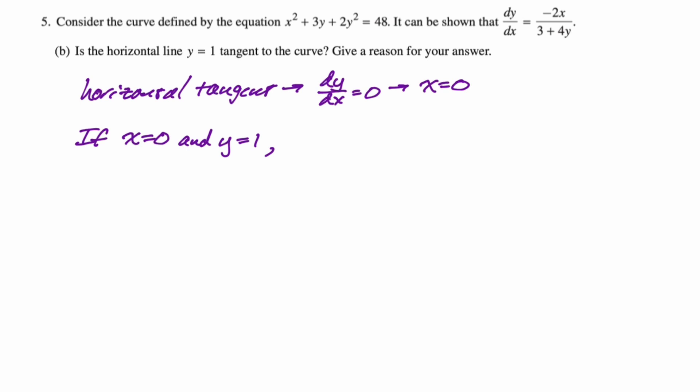So I'm saying if x is 0 and y is 1, I want to just see is there a point on the curve? So I'm plugging into our curve. I'm doing x squared plus 3 times the y plus 2 times the y squared. Does it equal 48? There's no way that equals 48, right? So that means that the point (0, 1) doesn't exist on the curve. There is no point on the curve where y equals 1 is tangent. That, I think, is a valid answer to this.